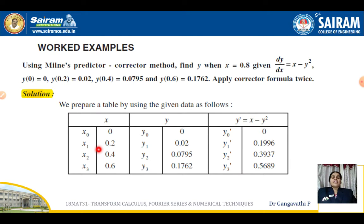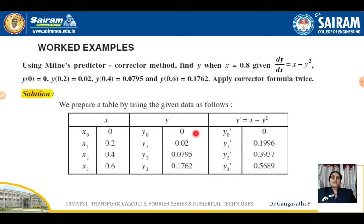Prepare a table with the given data. The x values are x₀, x₁, x₂, x₃ with values 0, 0.2, 0.4, 0.6, and the corresponding y values are y₀, y₁, y₂, y₃: 0, 0.02, 0.0795, 0.1762. We also need to find y' values. y' here is f(x, y) evaluated at each point — that is, y' = xy² (from the given equation, the right-hand side is taken as y').